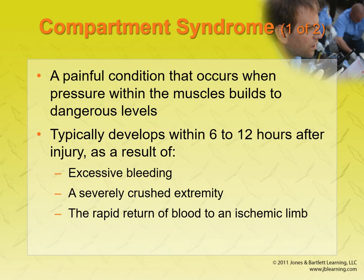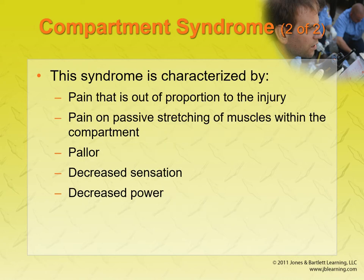Compartment syndrome takes about 6 to 12 hours to develop, and it can happen from excessive bleeding in a location — like a really bad crush injury — or if a tourniquet's been on for a while and then you loosen it and all that blood starts moving again. Our muscles are in these little compartments almost like saran wrap around them, and if it swells in there, that saran wrap doesn't want to stretch. It'll keep swelling until it actually collapses the arteries and veins, so you can actually lose a limb from compartment syndrome.